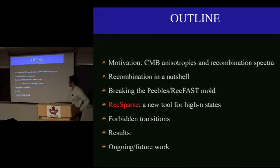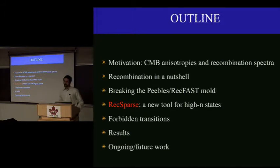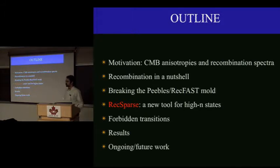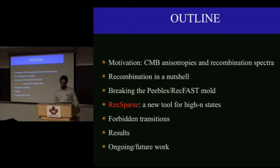The motivation for this work is two-fold. One is to make accurate predictions for CMB anisotropies in light of the recent Planck launch, and the other is to try to begin to make predictions of the spectra from recombination — the photons produced by the recombination epoch. This is something Jens has worked extensively on.